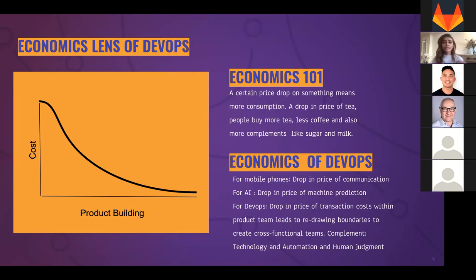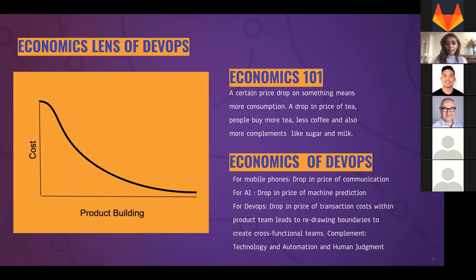This brings us to the economic lens of DevOps. A price drop means more consumption - if the price of tea drops, people buy more tea and more of what complements it, like sugar and milk. For mobile phones, it was a drop in the price of communication. For AI, it's a drop in the price of machine prediction. For DevOps, it's a drop in the price of transaction costs within teams, helping redraw boundaries to create cross-functional teams. The complements for DevOps are technology automation and human judgment.